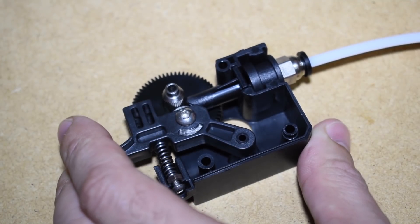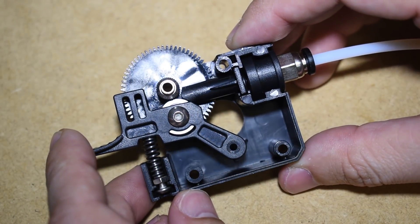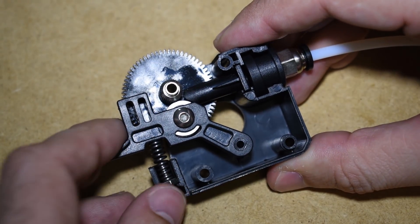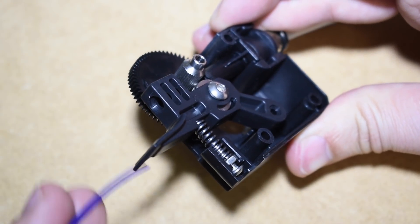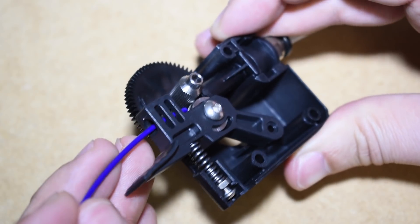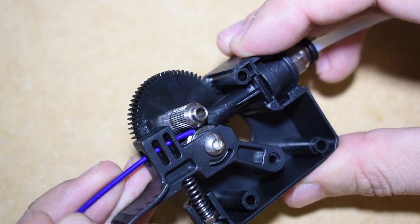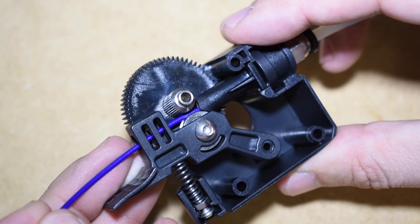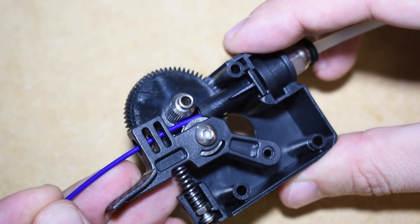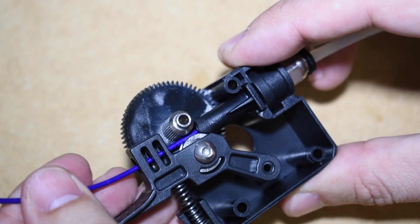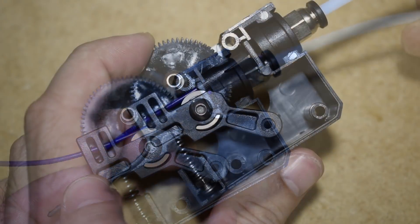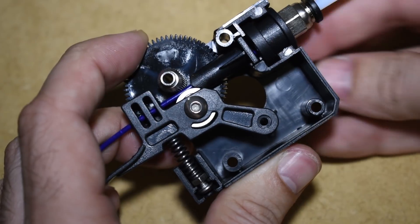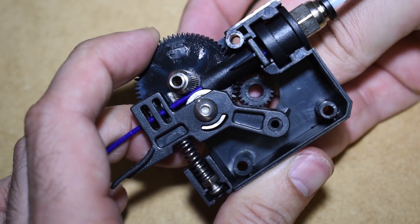This is how the extruder looks like inside. The filament goes in here and comes out through the other side. This small gear is connected to the stepper motor and turns the big geared wheel.